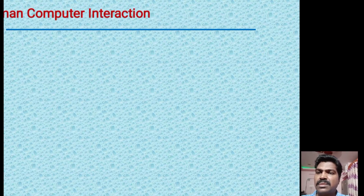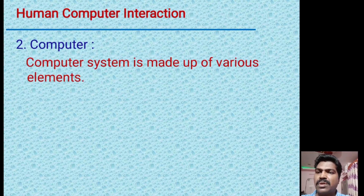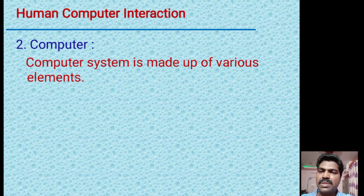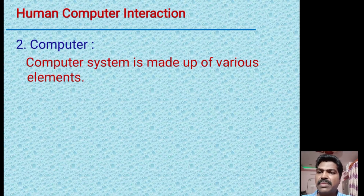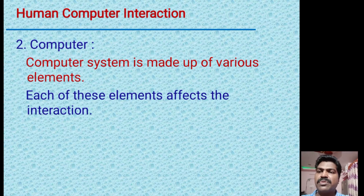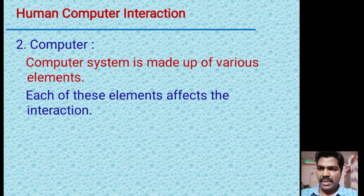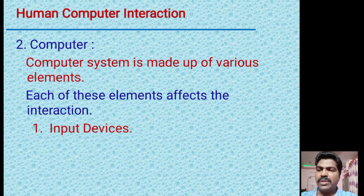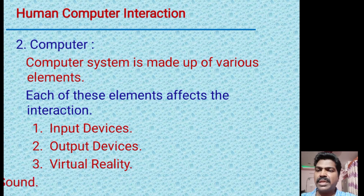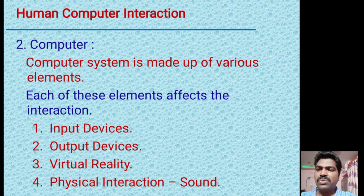Next, what is a computer? A computer is an electronic device which takes input, processes it, and gives output in a predefined manner. It is made up of various elements, and each of these elements affects the interaction — such as input devices, output devices, virtual reality, and physical interaction through sound.